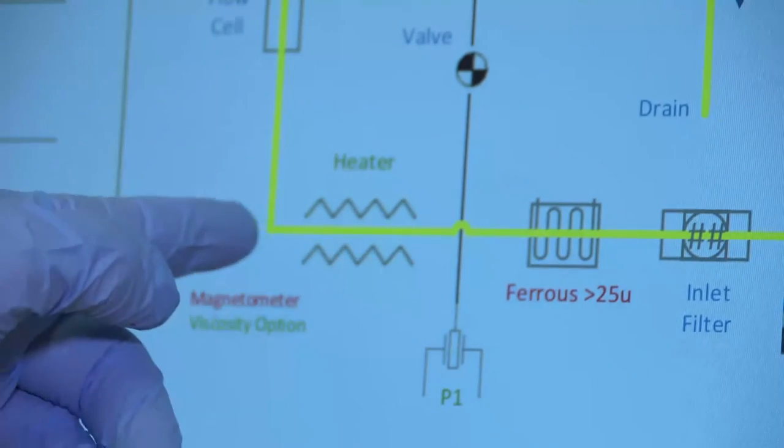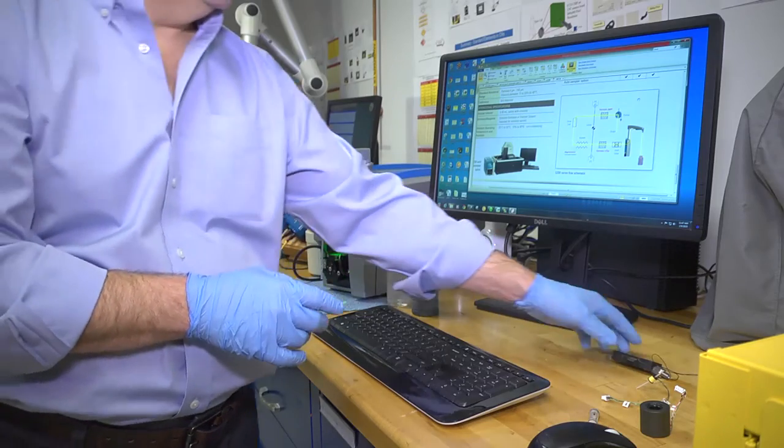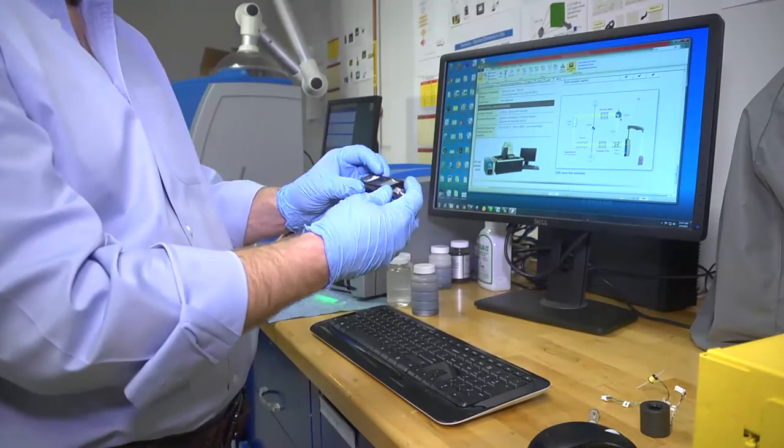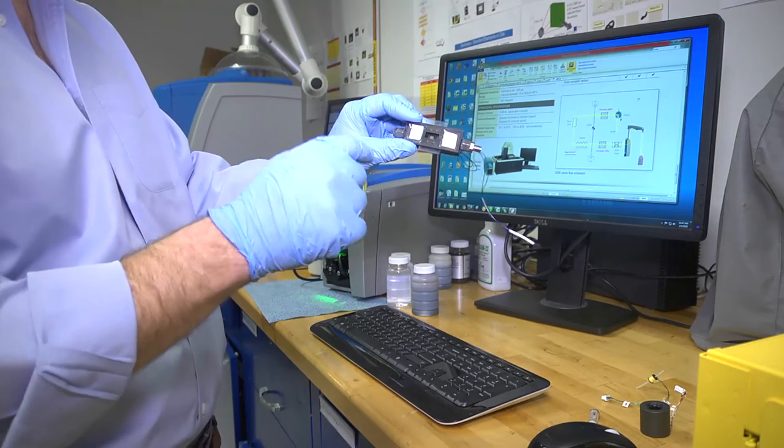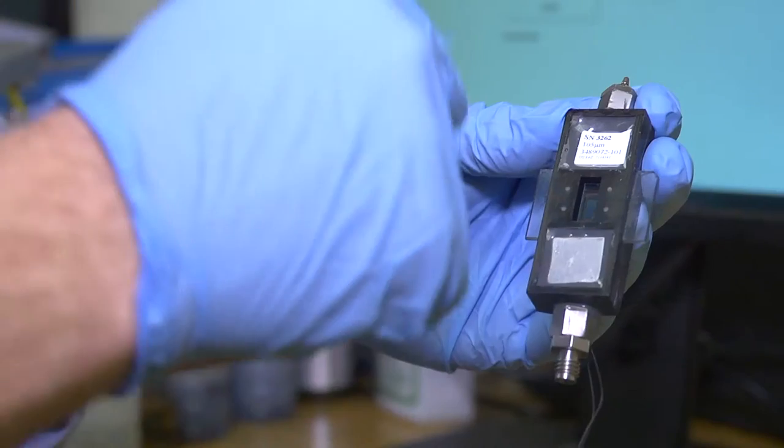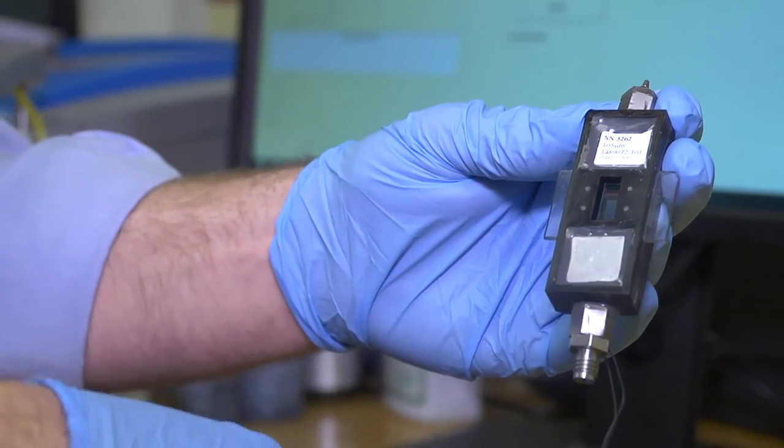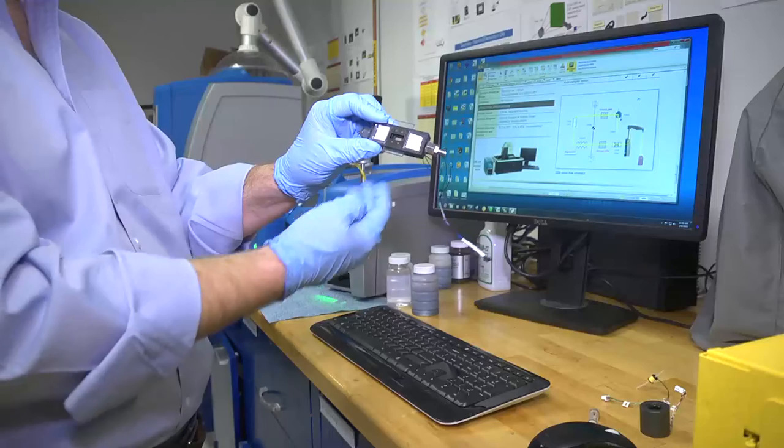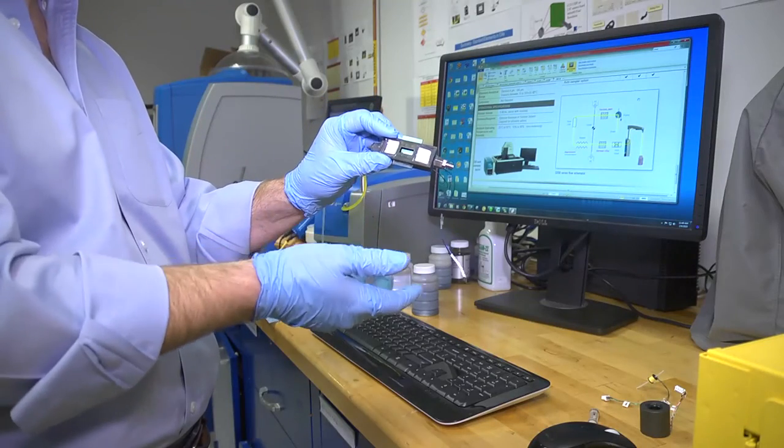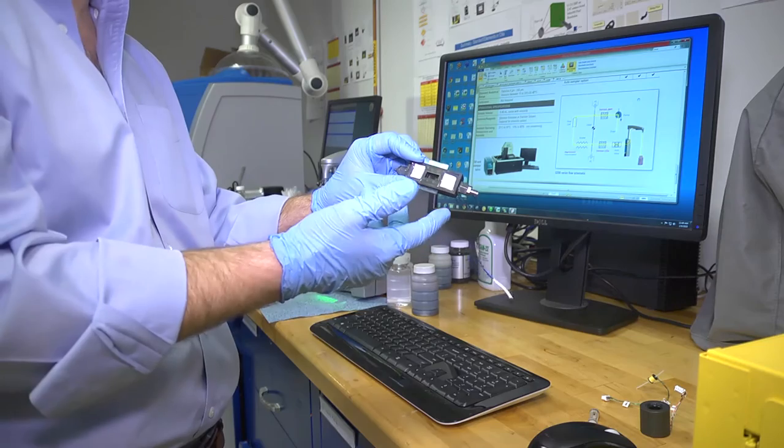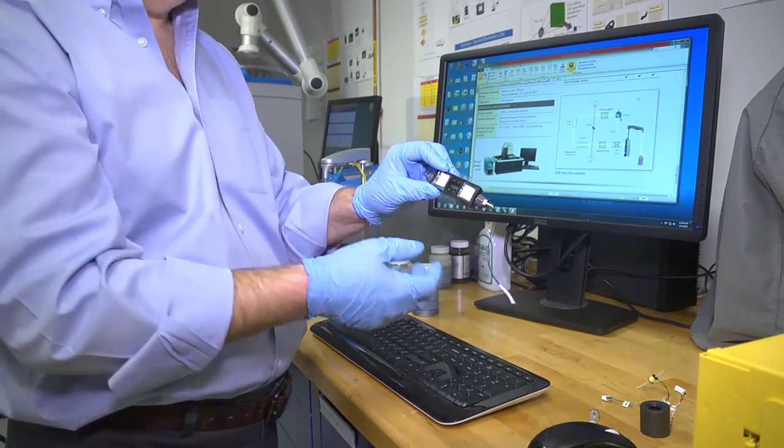Then as the sample continues to flow, it goes into the flow cell. The LNF flow cell provides laser-generated light that passes through the sample itself and then is imaged on the rear panel where there's a CCD detector. Just like a digital camera, it records and images each individual particle.